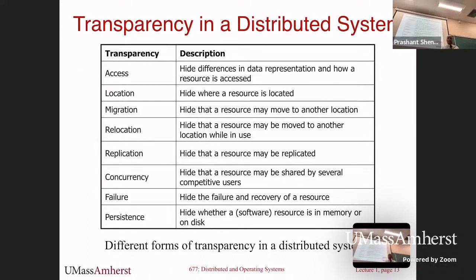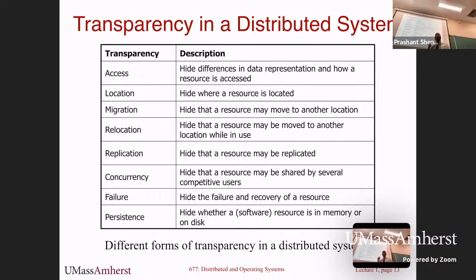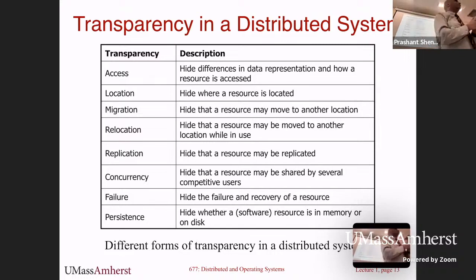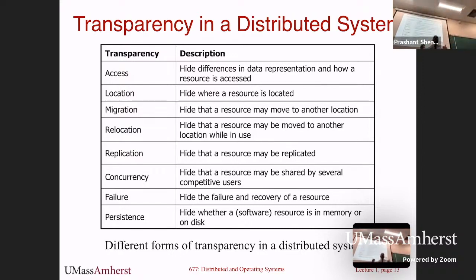Let me talk about transparency in distributed systems. When you design your system, you have to make choices about what your users will see and what you will hide from them. The general design principle is you don't want to expose needless complexity to your users — you want to handle complexity inside the system and expose simpler abstractions. What you hide and what you expose is captured by the term transparency: transparency means making something visible or not to your user.